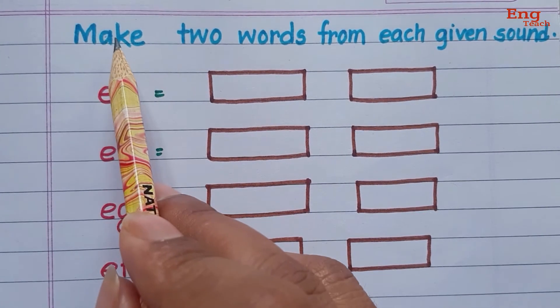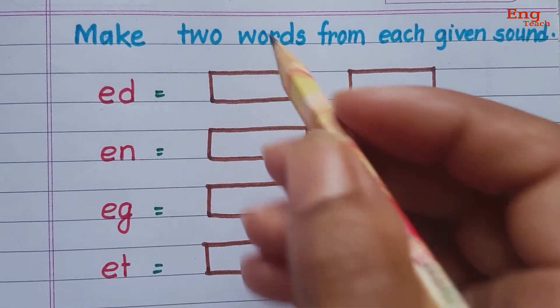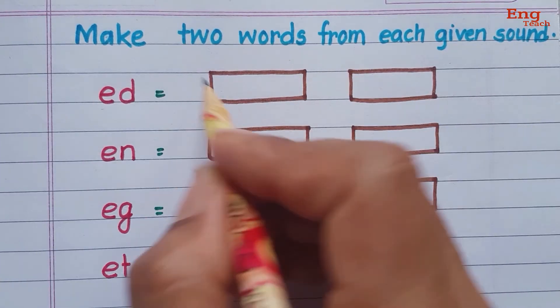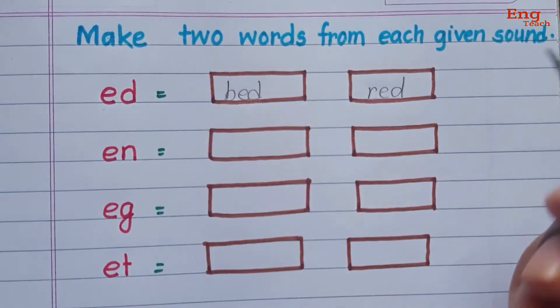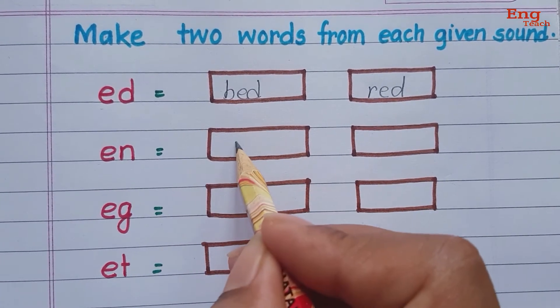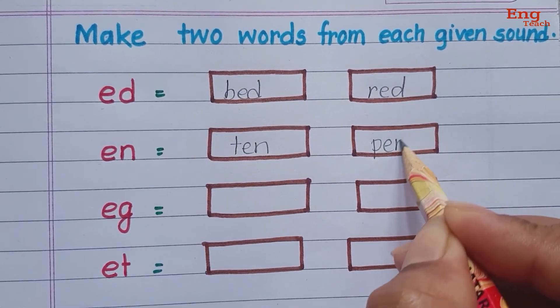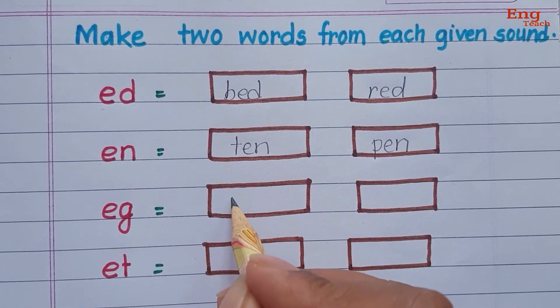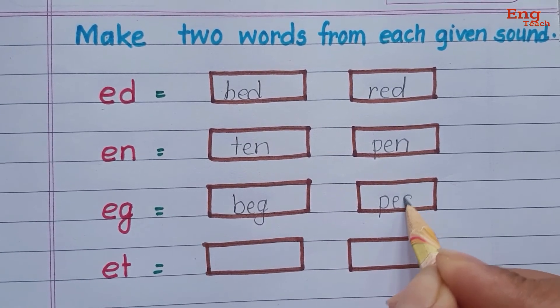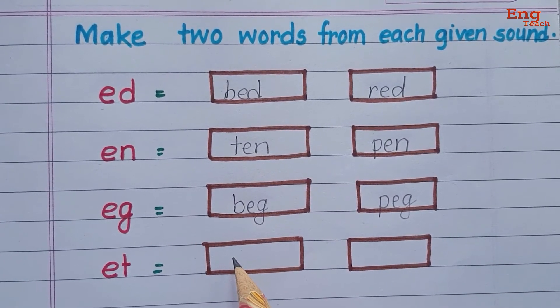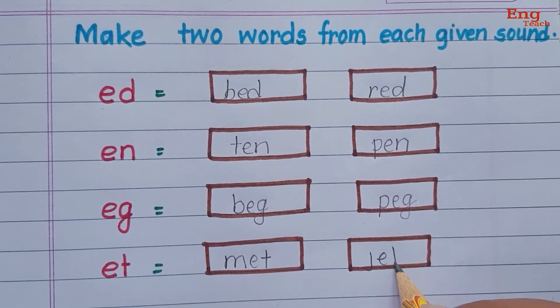Now, next work is make two words from each given sound. 'Ate': then we have to make words, bait and rate. This way, 'en': ten, pen. 'Eg': beg and peg. 'At': mate and jet.